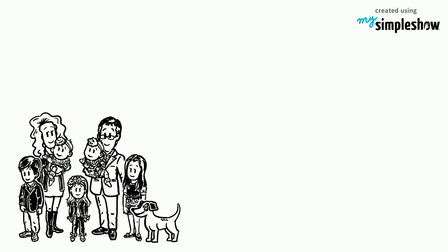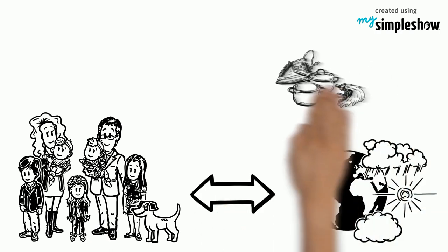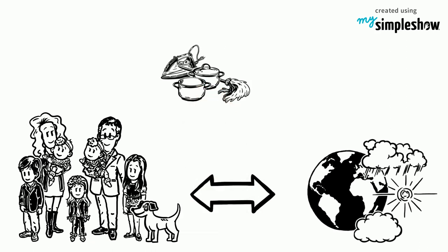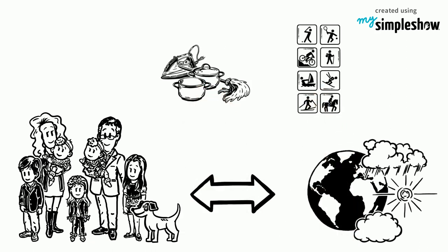Meet the Johnson family. Like many other families in the world, they are linked to climate change. This is because typical household items and activities directly influence climate change.